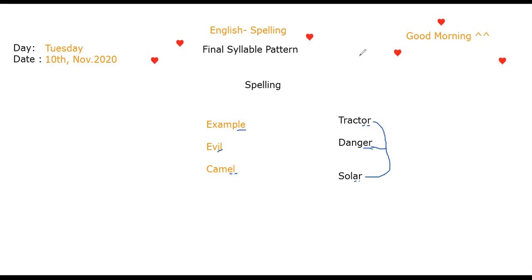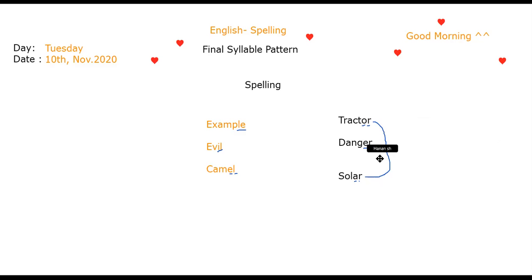Here we have danger and solar. Danger is with the E, solar is with the A — we say solar. Solar system. Danger, tractor, harbor, helicopter — all of them have the same sound but different spelling. That's why it's very important to understand the spelling. You will say them all the same. If you want to read correctly, like native speakers, it has to be the R sound. That's why it's important to have this lesson on final syllable.